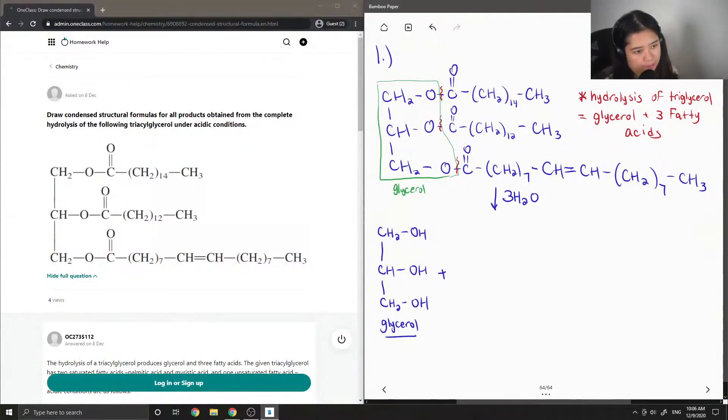Okay, so now I'm going to draw all the three fatty acids that were obtained if the complete hydrolysis of this triacylglycerol took place. So starting with the top substituent, I'm going to draw the carboxylic acid and then the long alkyl chain.